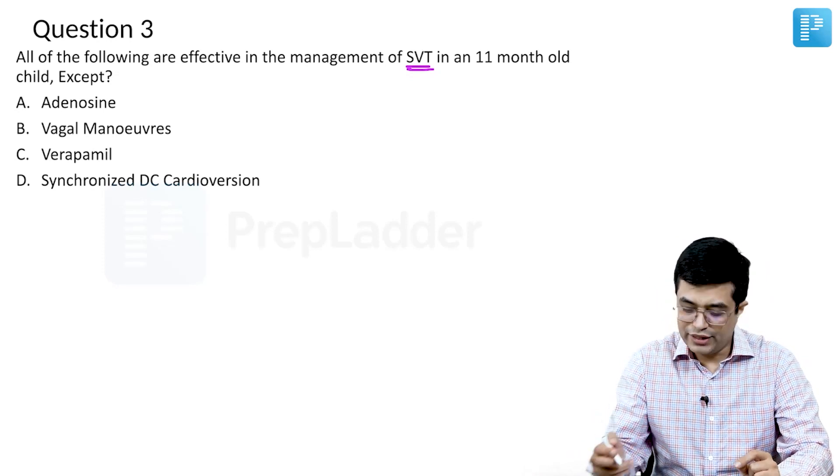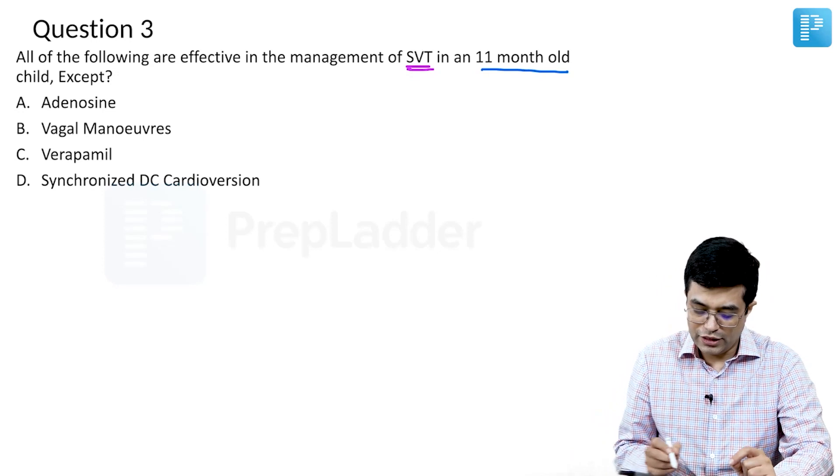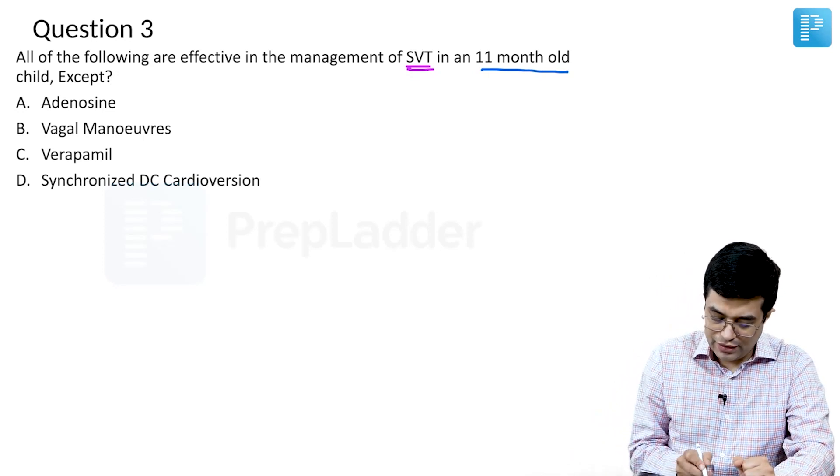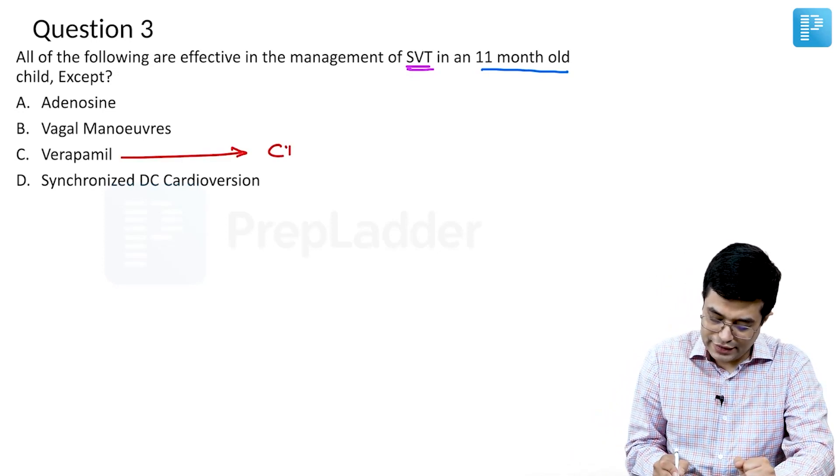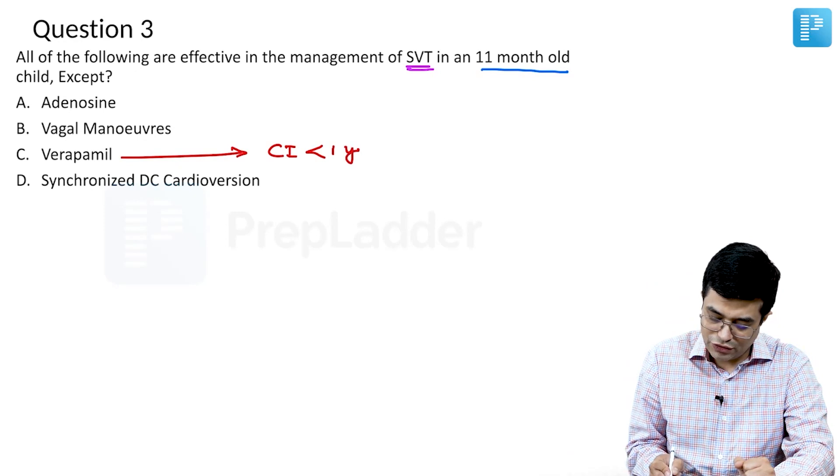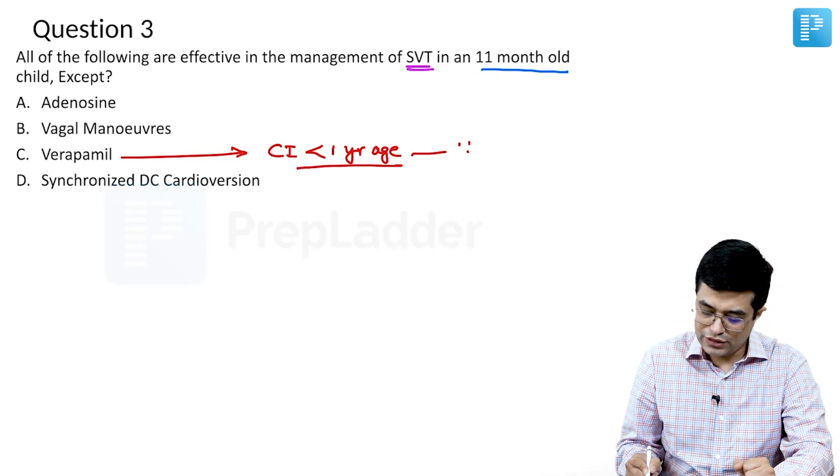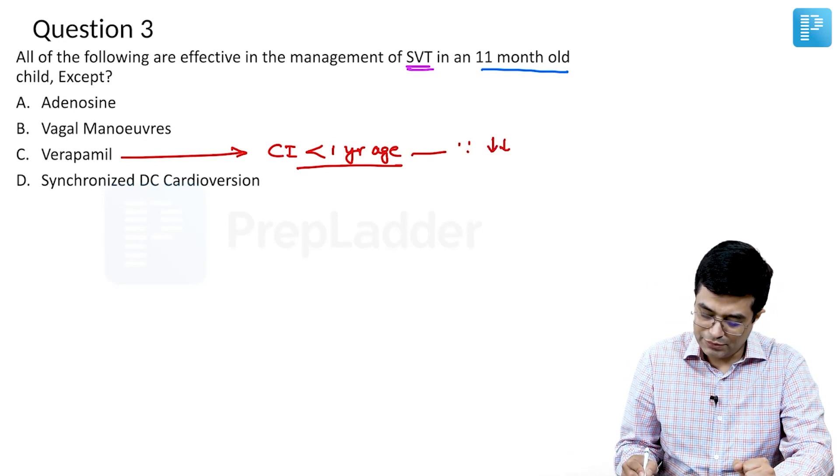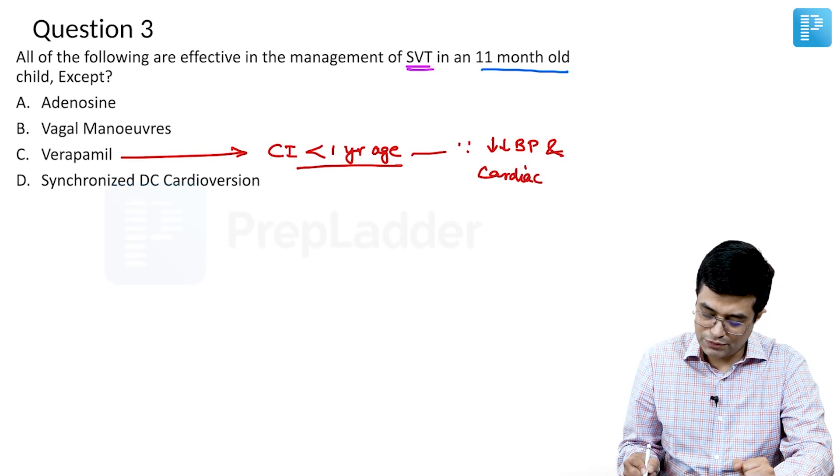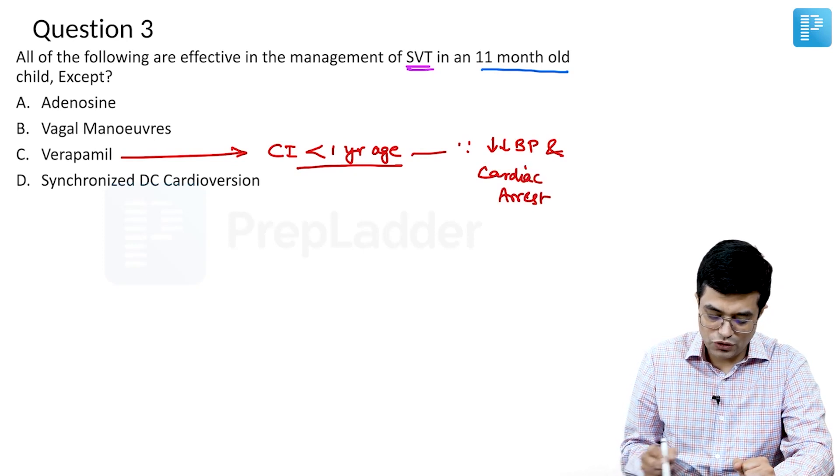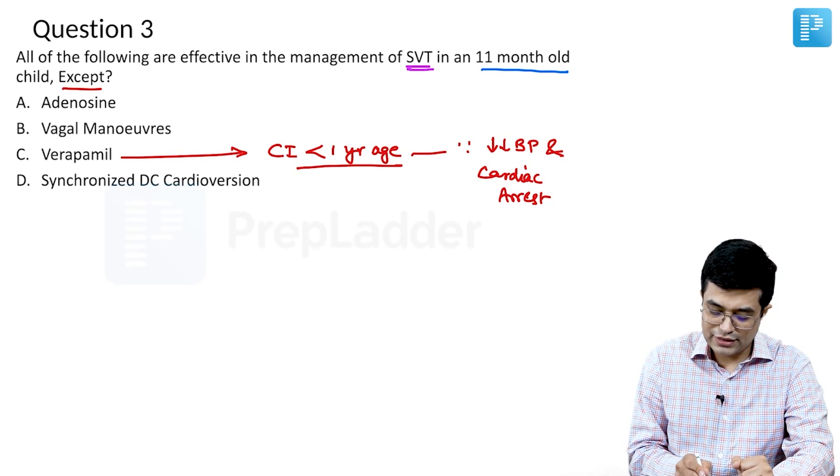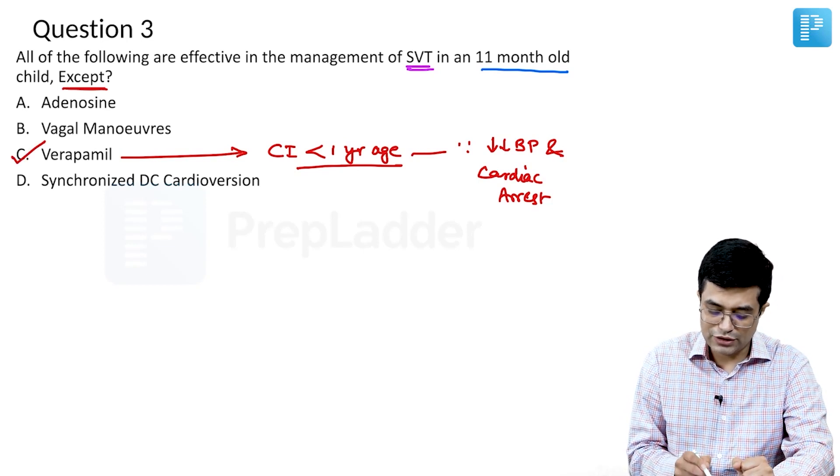However, the clinching point here is 11 month old. Remember that verapamil is contraindicated in children less than 1 year of age including those with SVT. Because it can cause severe fall in the blood pressure and can cause cardiac arrest. So it is absolutely contraindicated in this age group and so by exclusion they are asking all are effective except, so answer to this question is C.